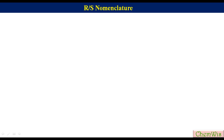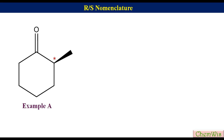Let's have some examples of cyclic compounds. Example A. We have to determine the absolute configuration of the chiral center shown by the star. The hatched wedge with the hydrogen is missing, so first add the hatched wedge with the hydrogen. Label the groups based on their priorities as 1, 2, 3, and 4. The fourth priority group is on a hatched wedge, so there is no need for interchange. Draw an arrow from 1 to 3 via 2. Since the direction of the arrow is counter clockwise, the absolute configuration of this molecule will be S.